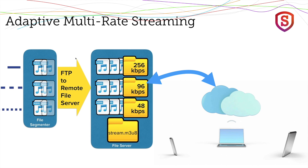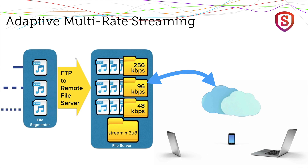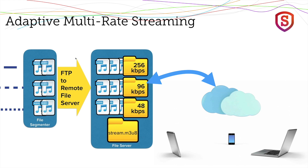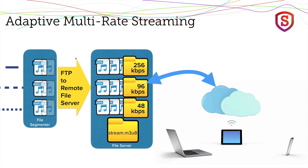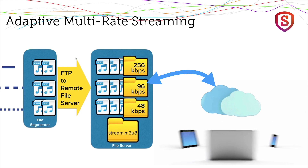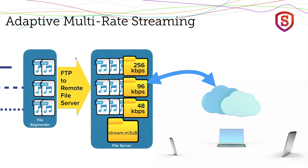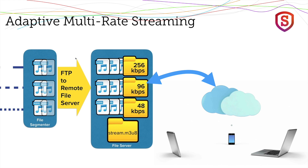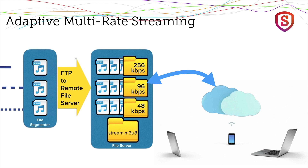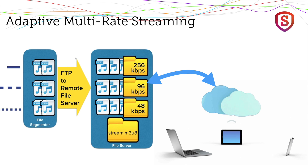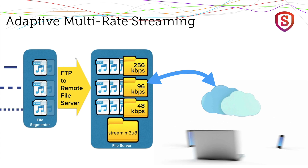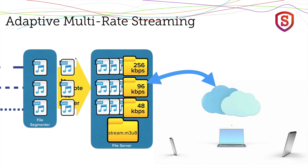The client decides which bitrate to use. It may start out with the lowest bitrate — the smallest file — quickly grab that and start playing audio. If the connection is fine and it downloads the small file quickly, it determines it has enough bandwidth to download a higher bitrate file, jumping to 96 or even 256 kilobits per second. The client is what makes the decision about which file to get from the server — that's how adaptive multi-rate streaming overcomes a variety of problems.